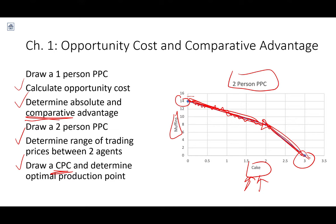Agents will trade with each other at a price between their opportunity costs such that they're both being made better off. The consumption possibilities curve (CPC) is determined by the market price ratio. We want to specialize in the good in which we have a comparative advantage relative to the market, trade at the market price, and consume whatever bundle we actually want. As soon as prices in the market change, we may need to change the good we're specializing in. We always want our CPC to be at or above our PPC.